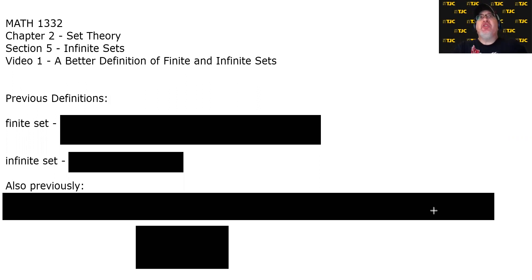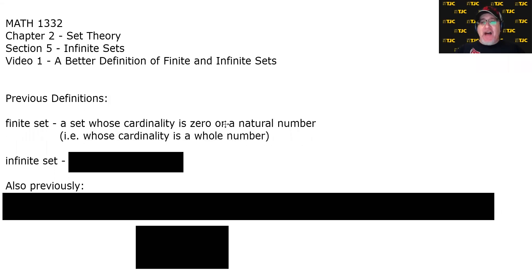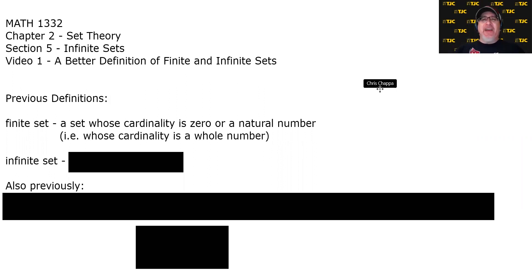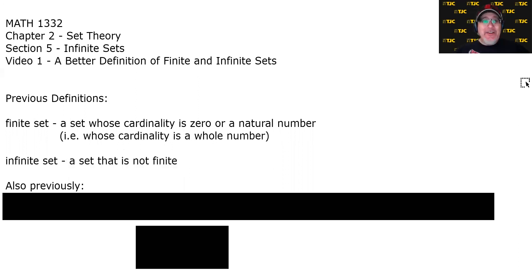A few sections ago in this chapter, we discussed the concept of infinite sets. Our definition of a finite set was a set whose cardinality is zero or a natural number, which is equivalent to saying that their cardinality is a whole number. The natural numbers start with 1, 2, 3, 4, etc., and the whole numbers start with 0, 1, 2, 3, 4. We include zero because the empty set should clearly be classified as a finite set. The definition of an infinite set was a set that is not finite — kind of a cop-out definition: you're just not a finite set.